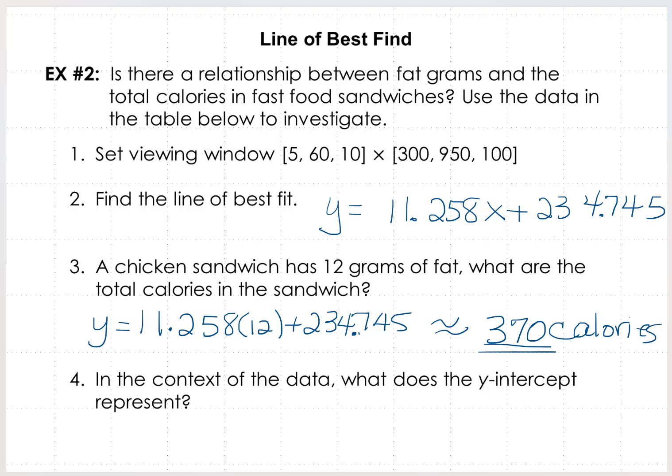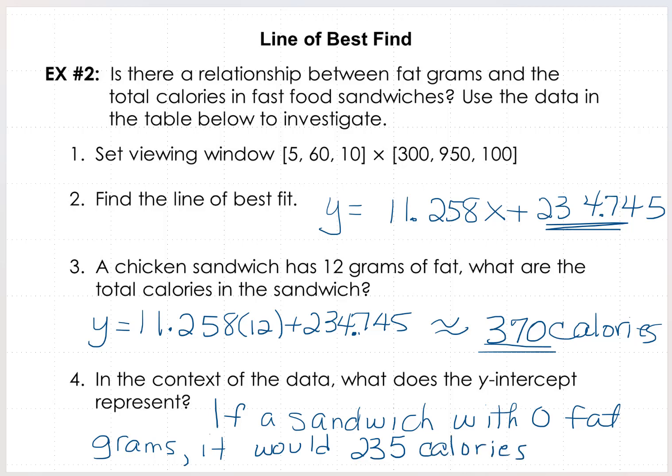And in the context of the data, what does the y-intercept represent? Well, let's see. If x is the fat, then that would represent if a sandwich had zero fat calories. I'm sorry, no fat grams at all. Then the sandwich would have 234, roughly 235 calories to be a fat-free sandwich. If a sandwich had zero fat grams, it would have 235 calories.